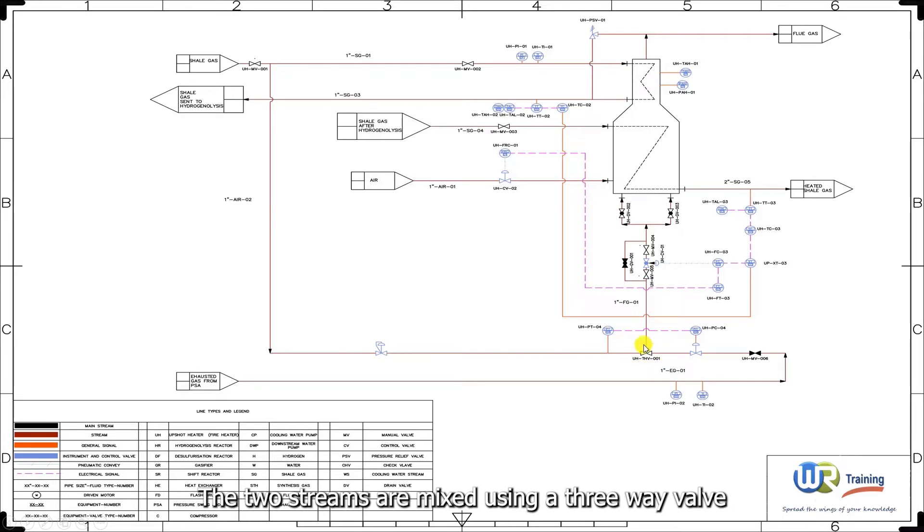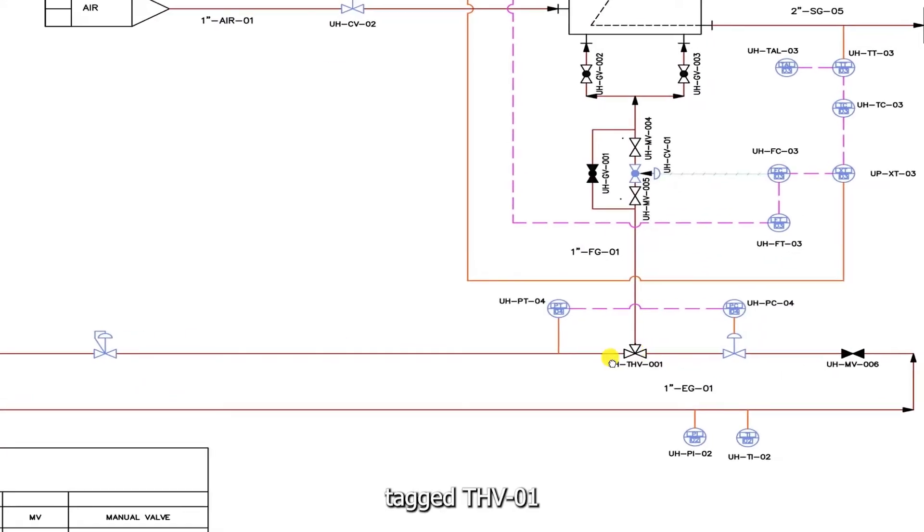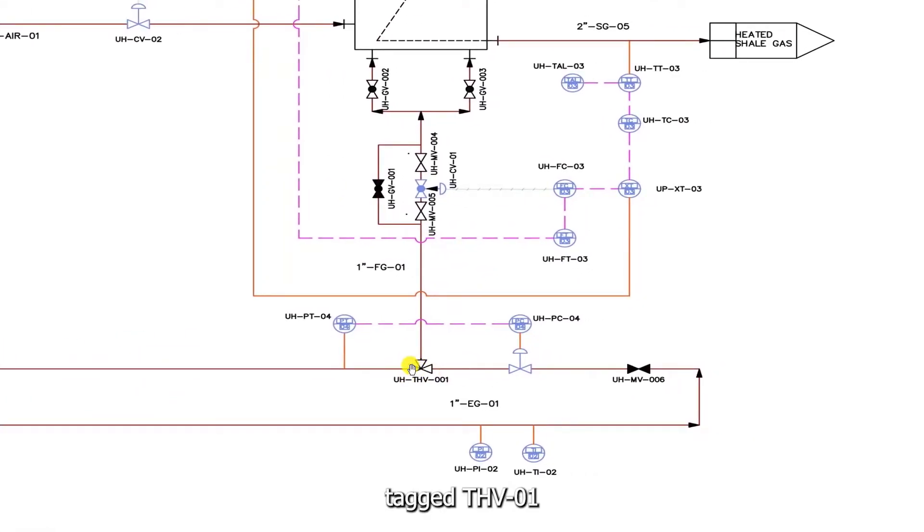The two streams are mixed using a three-way valve, tagged THV01. The control of the gas mixture is done through this control loop. We'll come back to it in a few moments. Now, the gas mixture flows through a one-inch pipe, three valves in a series, two manual gate valves, and one control valve, tagged CV01.